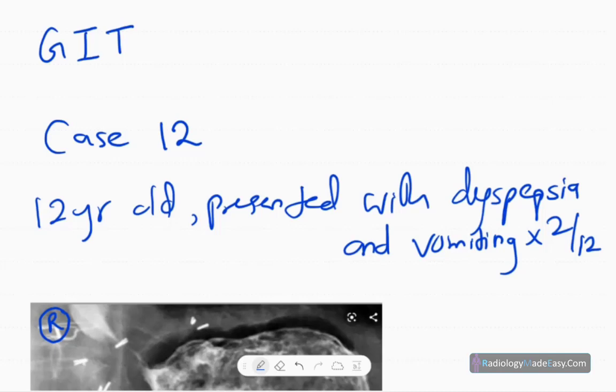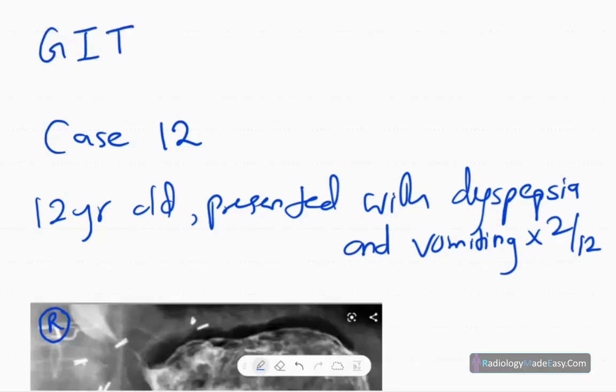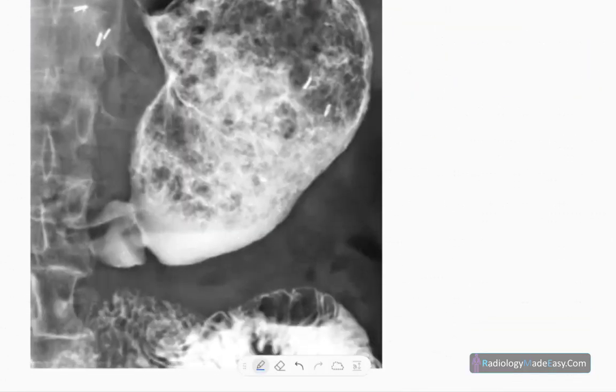Welcome back everyone. This is case number 12 in GIT contrast studies. The patient is a 12-year-old presented with dyspepsia and vomiting for two months duration. This is the anteroposterior spot radiograph in the barium meal series.